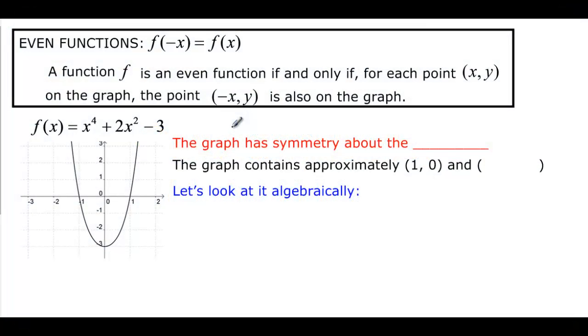What that really means is if it's an even function, if I'm going to have the point (x, y) on my graph, I'm also going to have the point (-x, y). I have a negative x here and the same positive y output.